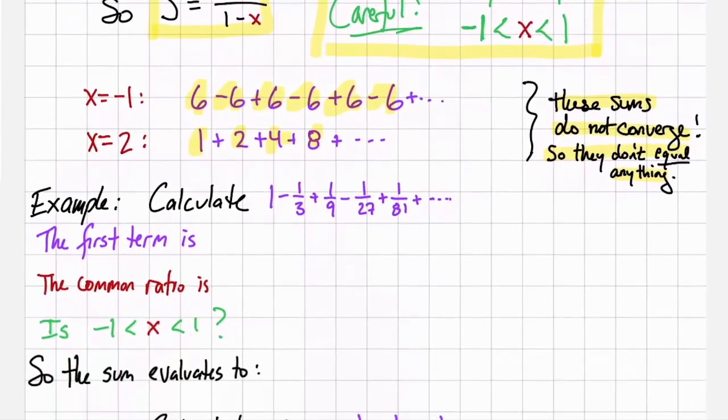Let's do some examples. Let's calculate 1 minus a third plus a ninth minus one twenty-seventh plus one over eighty-one, continuing on forever. The first term is 1. The common ratio is negative one-third because every time we multiply by negative one-third. Is that value between negative 1 and 1? Yes. So there will be an answer. When we apply the formula, we get 1 over 1 minus negative one-third or 1 over 1 plus a third, which is equal to three quarters.